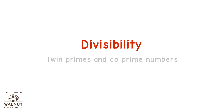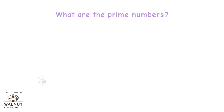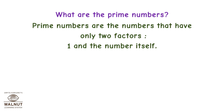Divisibility, Twin Primes and Co-Prime Numbers. What are the Prime Numbers? We have learnt about Prime Numbers. Prime Numbers are the numbers that have only two factors, one and the number itself.